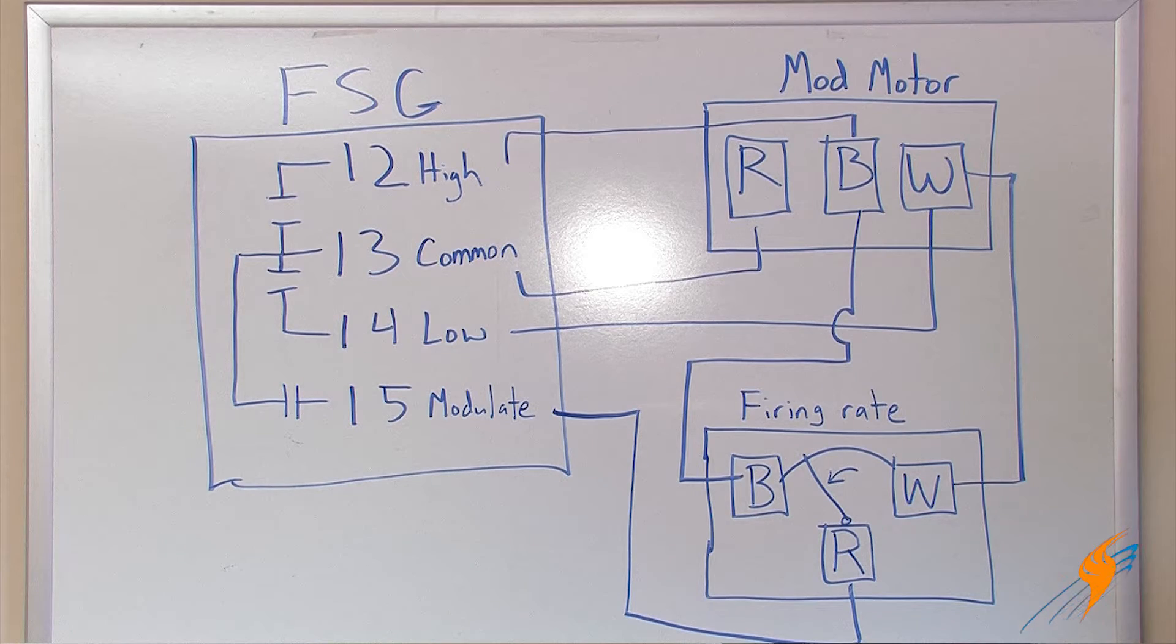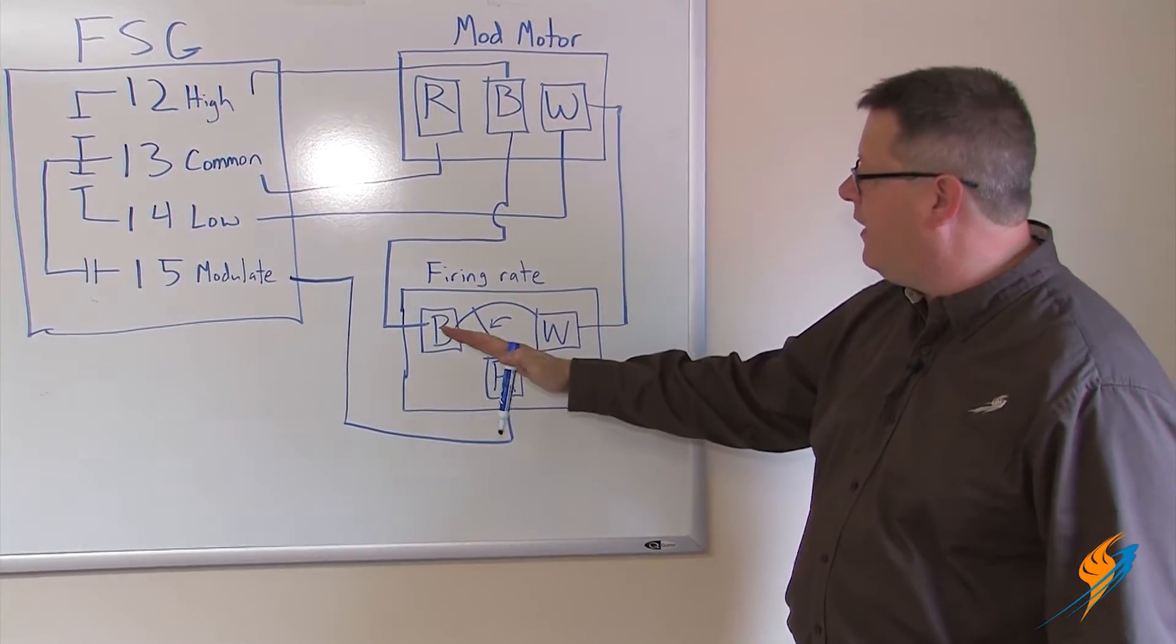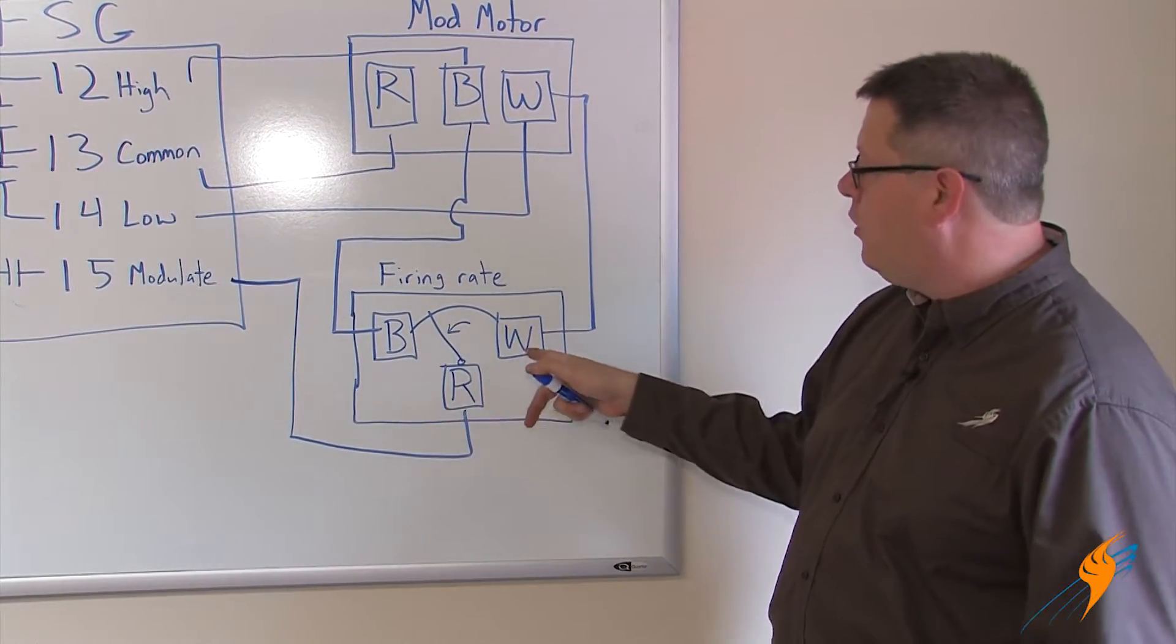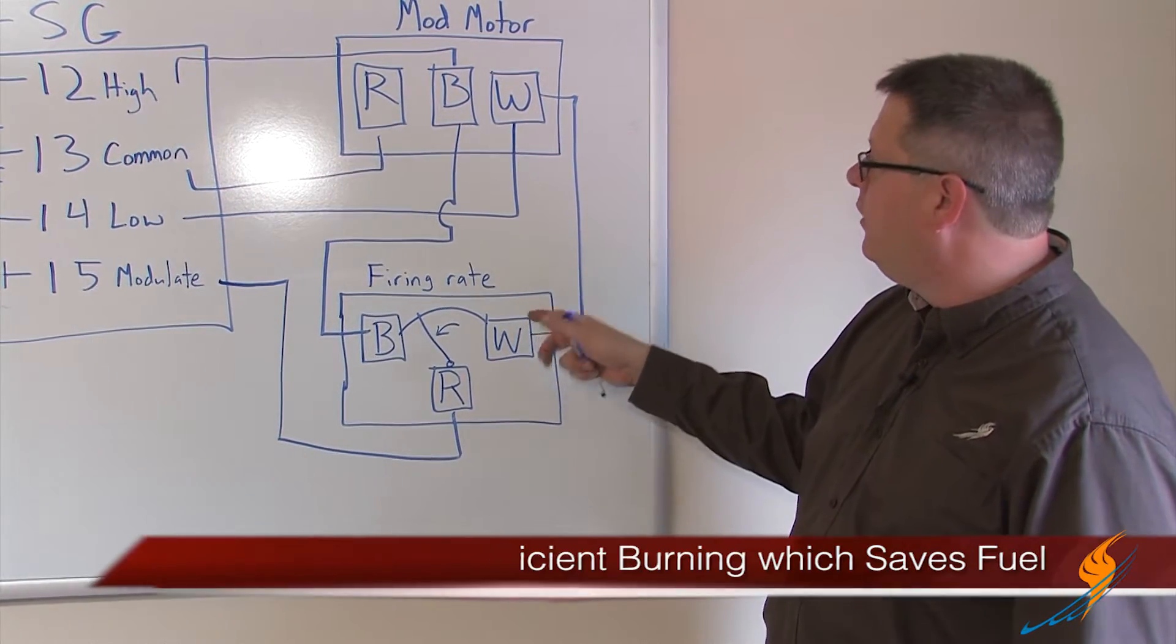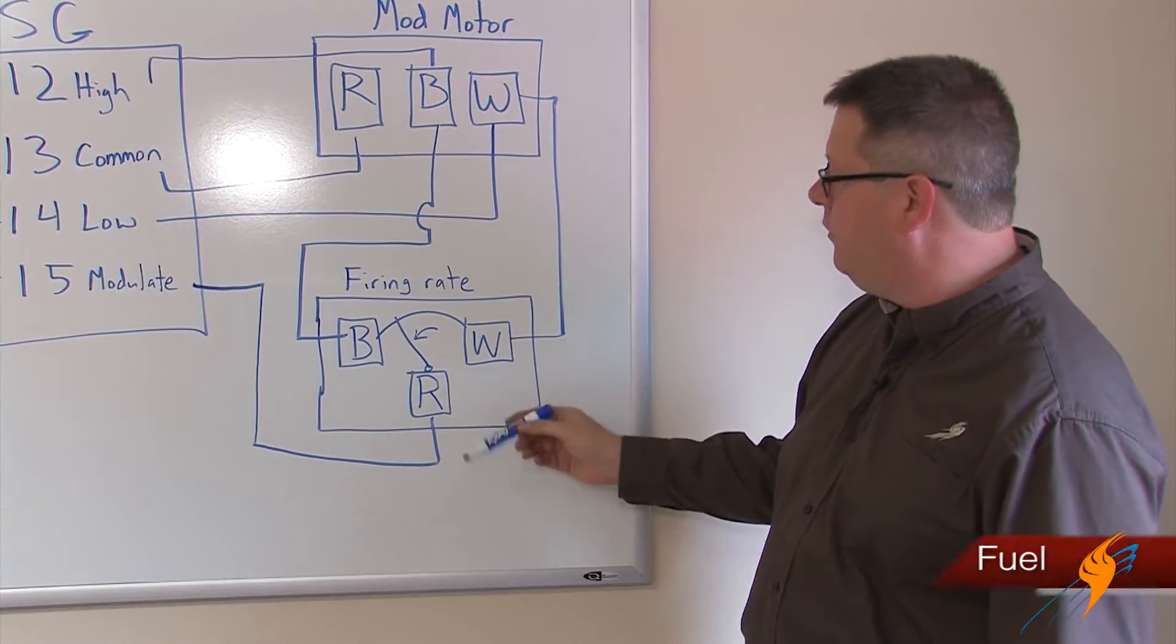When the mod motor R terminal is jumped to the firing rate control, now the pressure affects the proportion of the connection to the B, the high fire terminal, or the W, the low fire terminal, and it modulates the firing rate according to the pressure input.